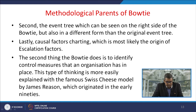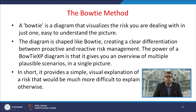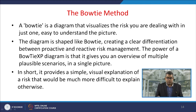The second thing the bow tie does is identify control measures that an organisation has in place. This type of thinking is more easily explained with the famous Swiss cheese model by James Reason, originating in the early 90s. A bow tie diagram visualises the risk in one easy-to-understand picture, shaped like a bow tie, creating a clear difference between proactive and reactive management, providing an overview of multiple plausible scenarios and a simple visual explanation of risk.